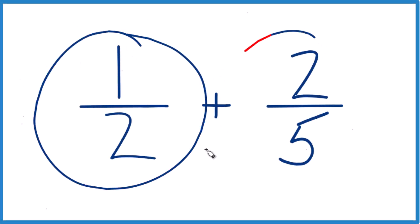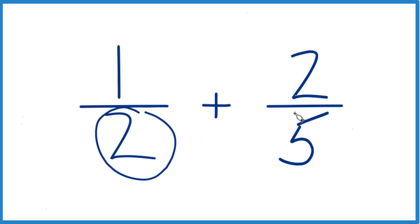So one-half plus two-fifths, how do you figure that out? Well, if we have the same denominator here,